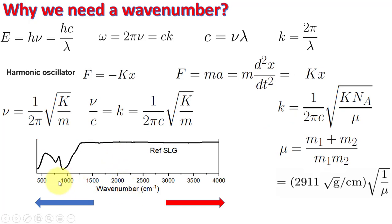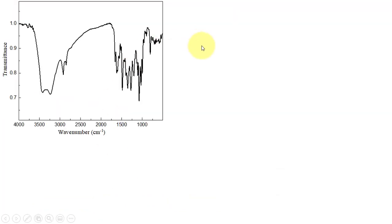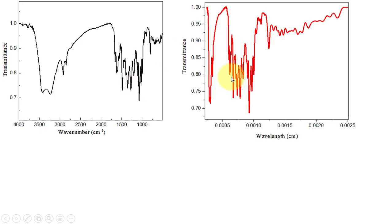In the FTIR spectrum, we traditionally plot from high wave number to lower wave number. A typical IR spectrum of a compound shows different peaks indicating different bonds. If we plot the same spectrum in energy or in wavelength instead of wave number, the appearance changes significantly.